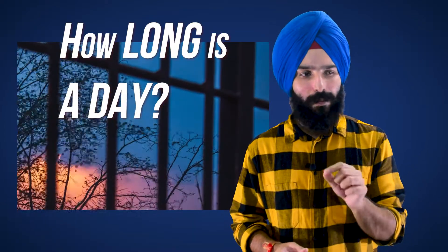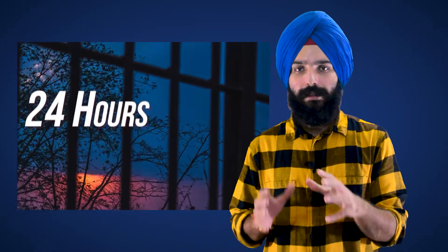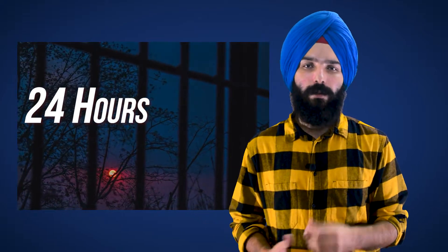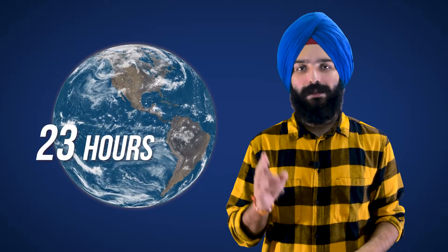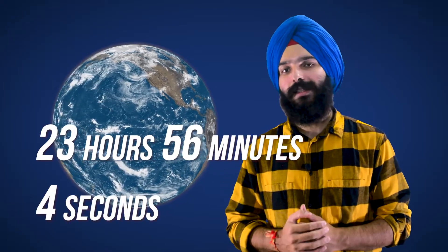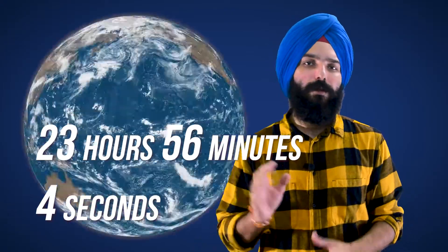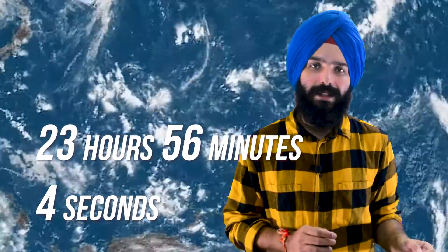So how long is a day? You might say it's 24 hours, the time it takes for the earth to rotate once around its axis. And that's almost true. But in reality, the time it really takes for the earth to rotate once around its axis is 23 hours, 56 minutes, and 4 seconds. That's almost 4 minutes short.